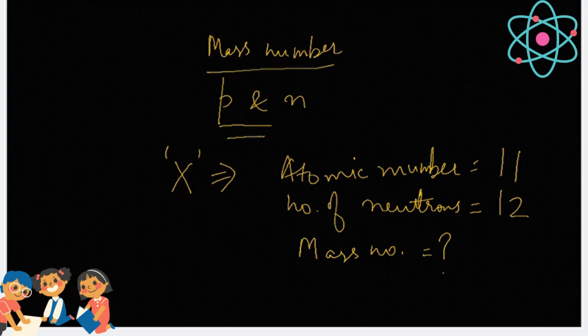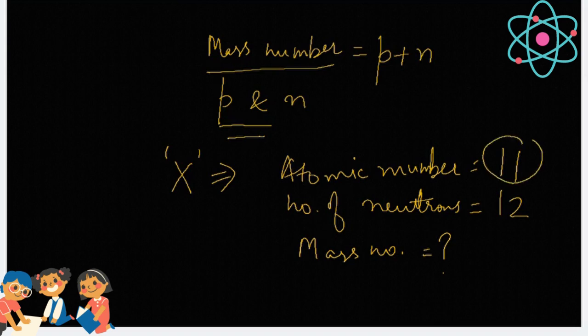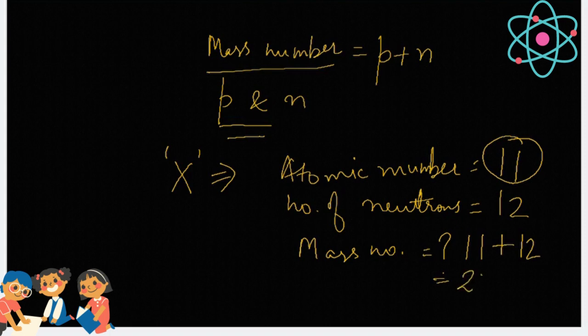So, as you know that mass number equals the sum of protons and neutrons, that is P plus N. Since in the question they have given you atomic number which means the number of protons are provided to you, and you know the number of neutrons, you just straight away put the formula: proton which is 11 plus neutron which is 12, you will get the answer as 23.